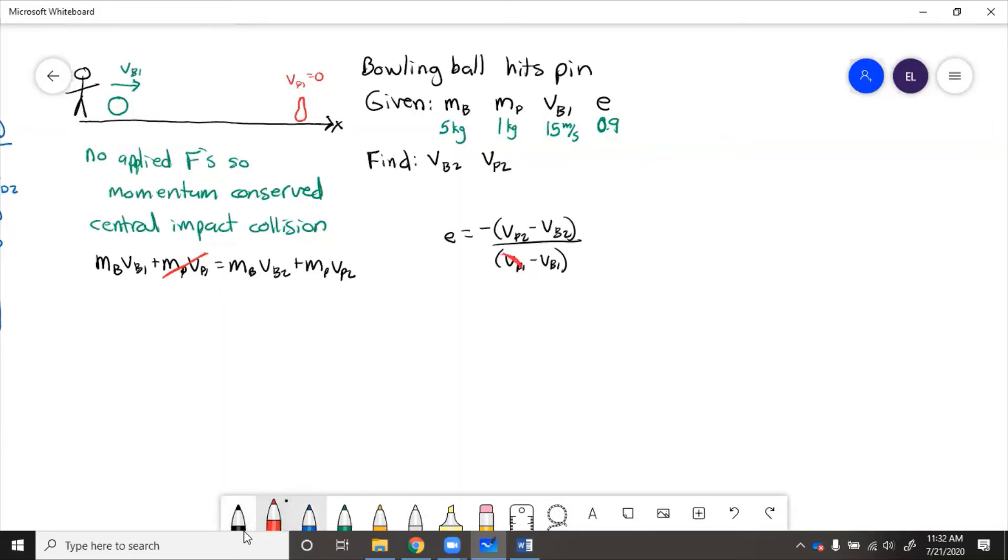So if we put numbers into here, then we can say 5 times 15, and we know this is a positive 15 because it's going in the positive x direction, equals 5VB2 plus 1VP2.